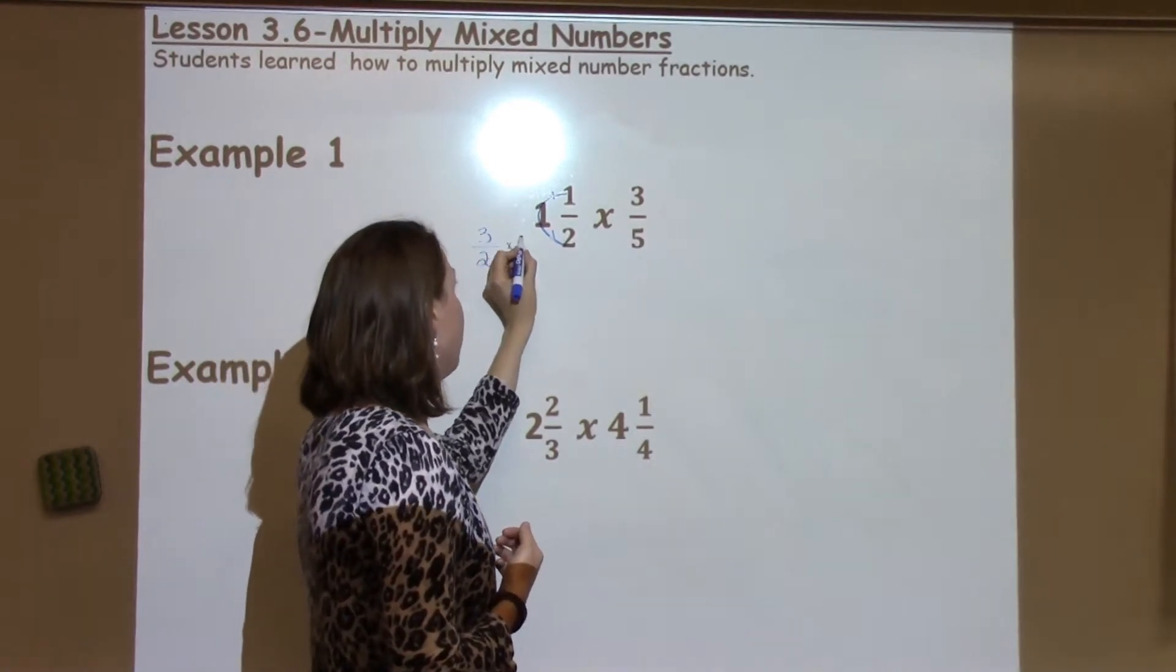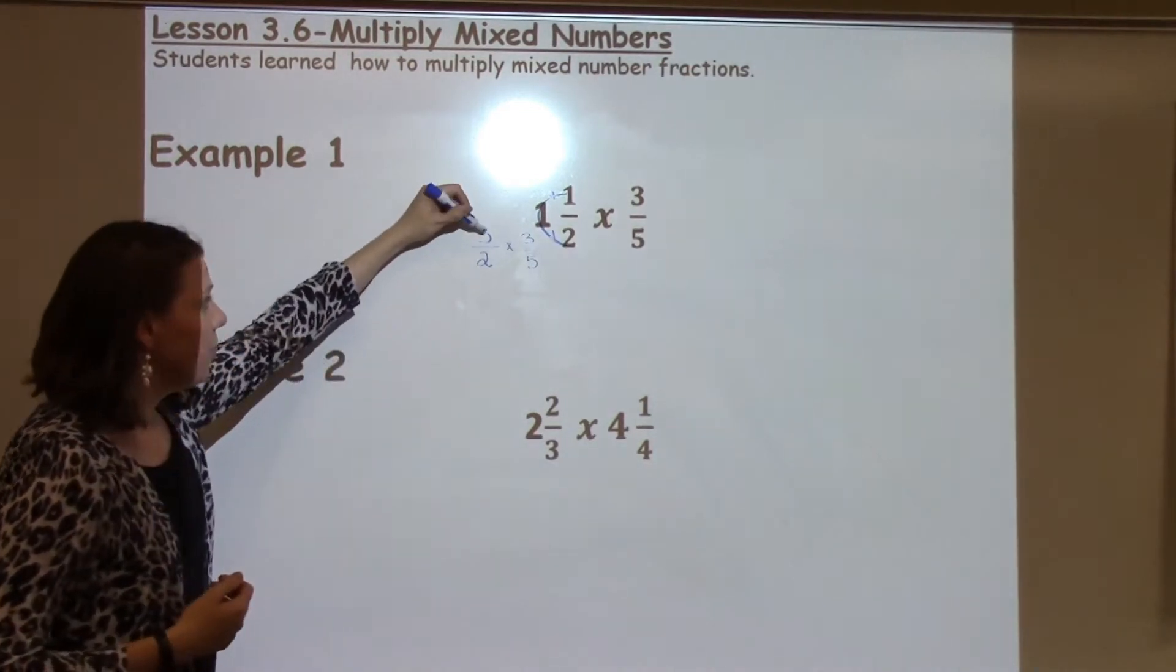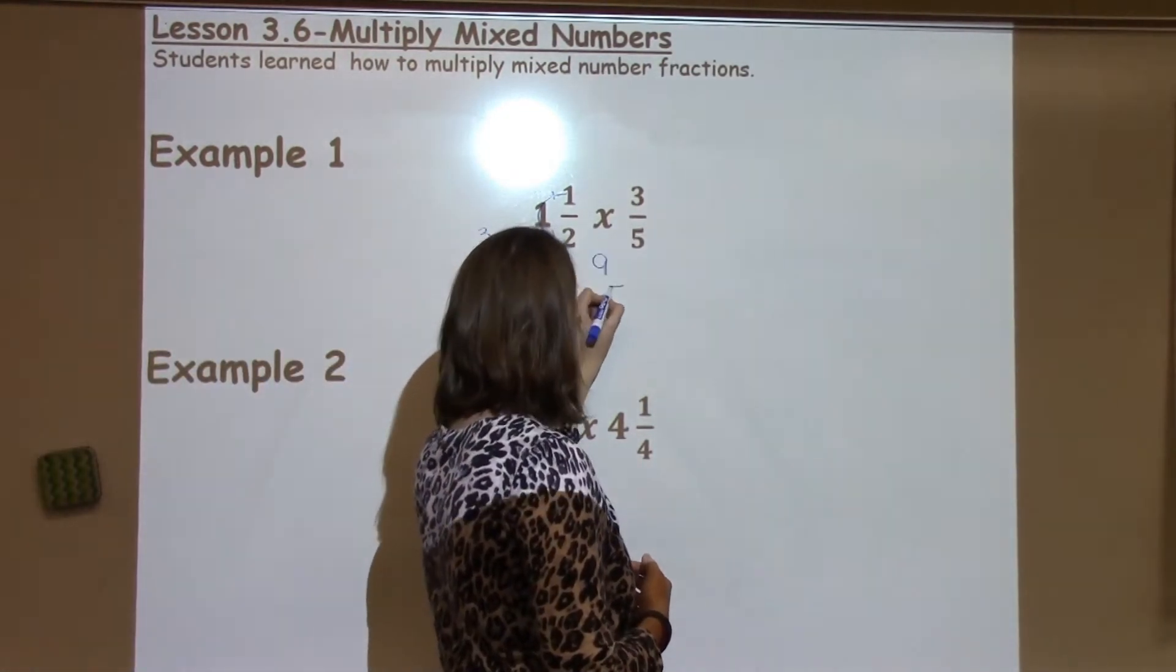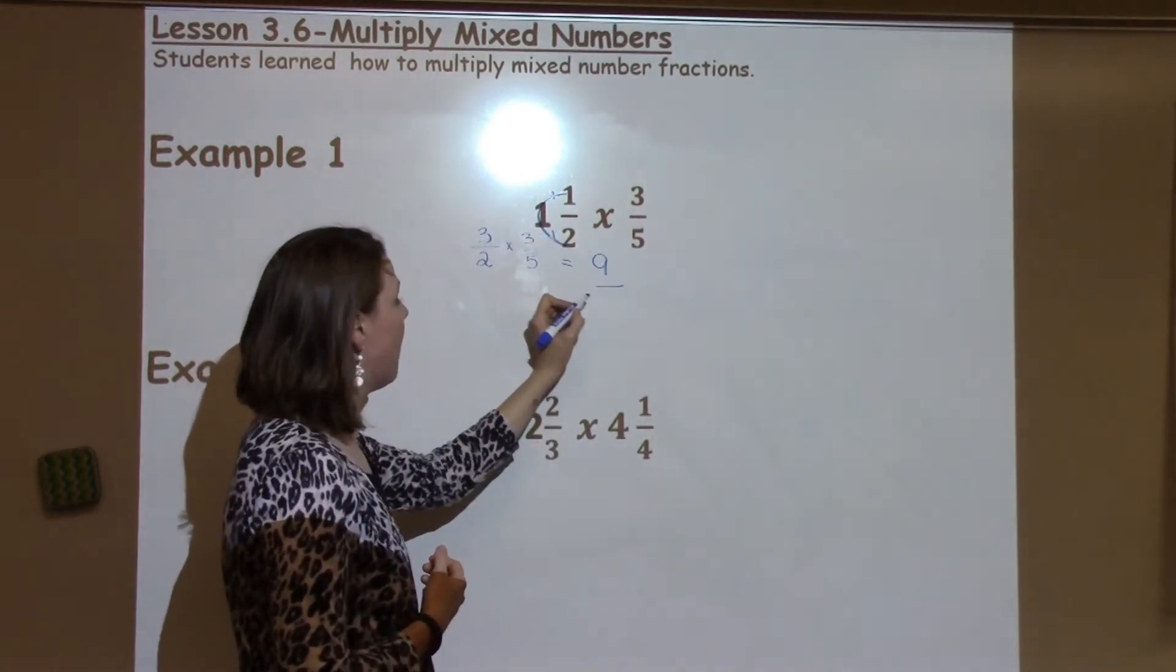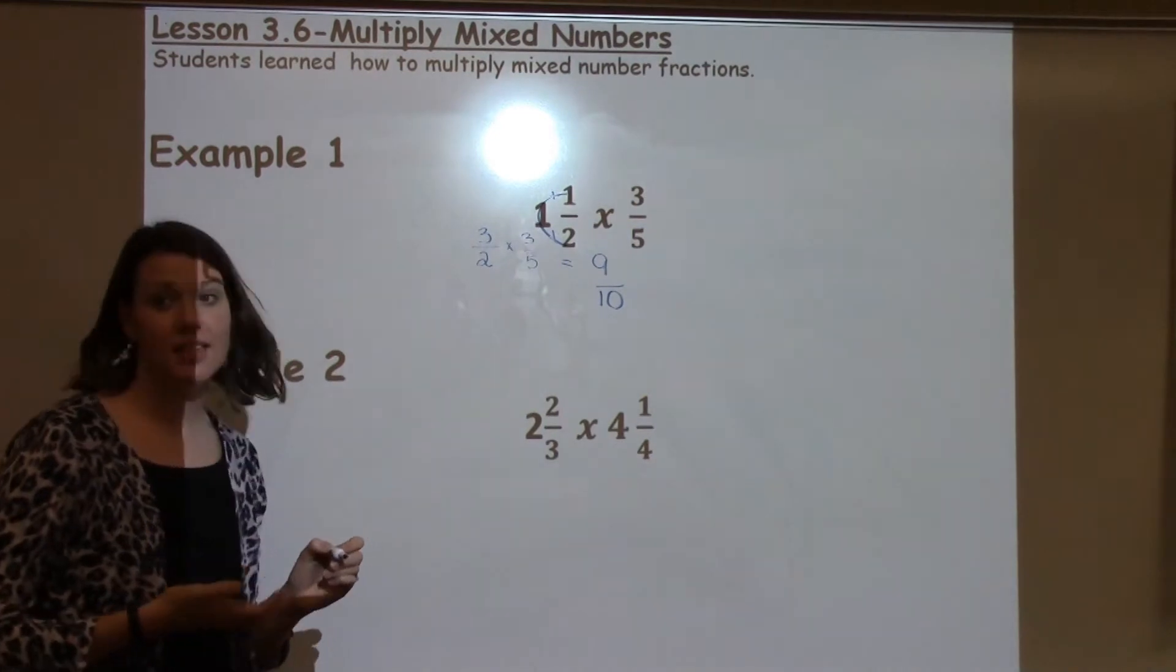Now I'm going to multiply that by my 3 fifths. I know 3 times 3, I'm going to scoot this down a little bit, is 9, and 2 times 5 is 10. So my answer is 9 tenths.